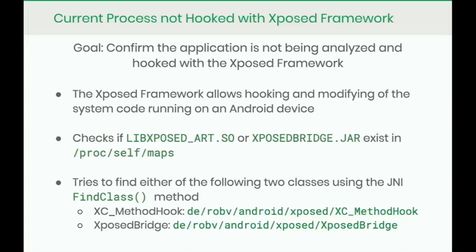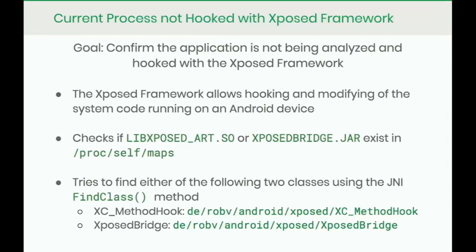The very last runtime environment check determines if the Xposed framework is running. Xposed allows you to hook or modify system code on Android — they want to make sure you haven't hooked their app for analysis. They check if two Xposed-related files exist in /proc/self/maps, meaning they've been mapped into memory. Then they also use JNI FindClass to check if either of two Xposed class methods are running — because they want to be really sure Xposed isn't running.